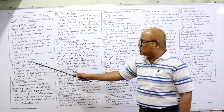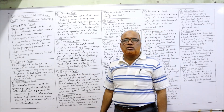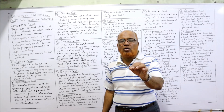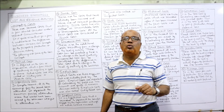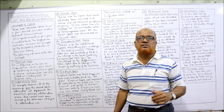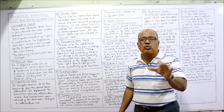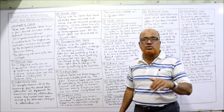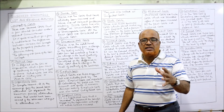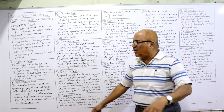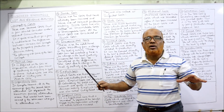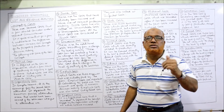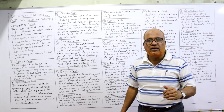First is actual cost. Actual cost is the total cost incurred in order to produce goods or to provide a service. Without finding out the actual cost, we cannot find out the profit or loss. So profit or loss can be ascertained only after finding out the actual cost.